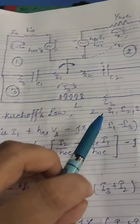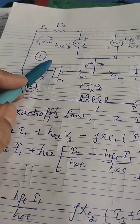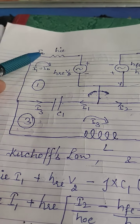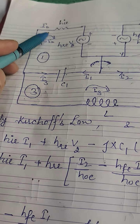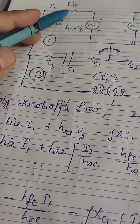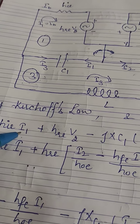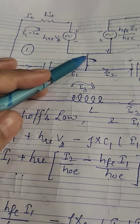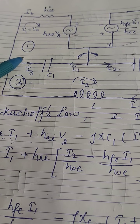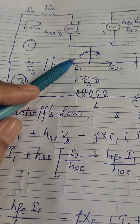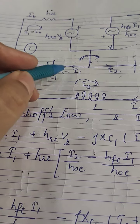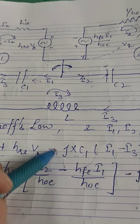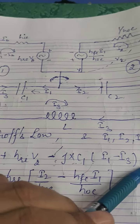Since i1, i2, and i3 are not equal to zero, we apply Kirchhoff's voltage law on all three loops. In the first loop, current flows clockwise and the sum of voltages equals zero. Voltage across resistance hie equals i1·hie. Adding hre·v2, the net current through capacitor C1 is (i1 − i3), since i3 also flows through C1 from the other side. So the term is (i1 − i3)·(−jXc1) = 0.